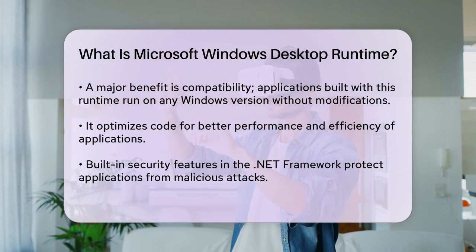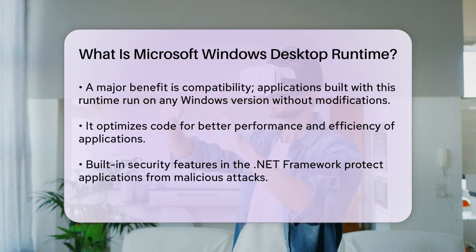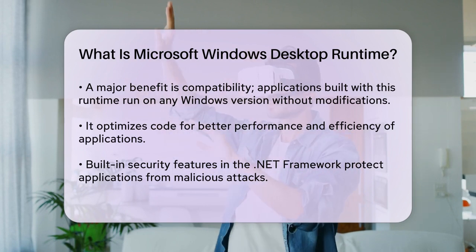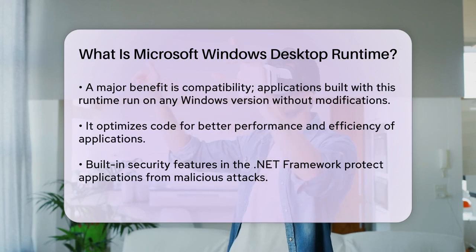To check which version of Microsoft Windows Desktop Runtime is installed on your device, you can use the command prompt. Simply type dotnet --list-runtimes to see the installed runtime versions.